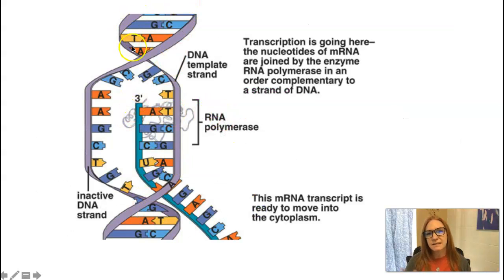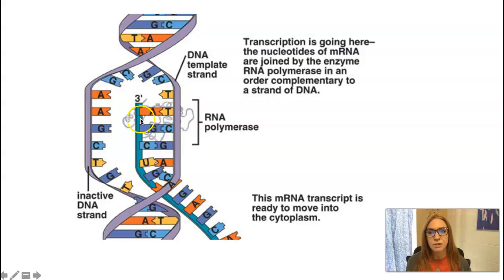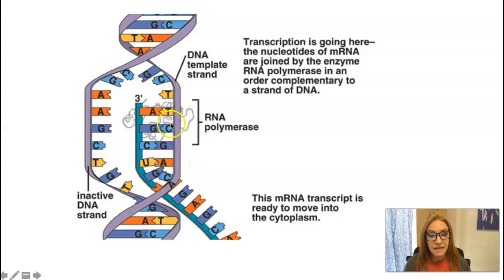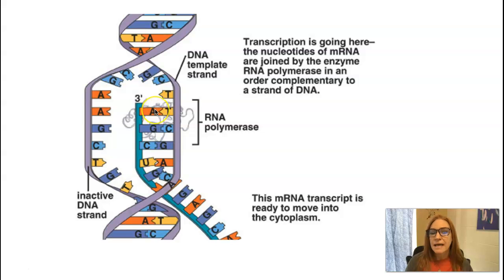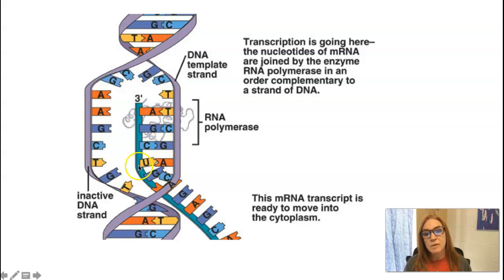DNA is a double-stranded, twisty molecule. If this is the gene, the DNA gets unzipped at the center — this all happens by enzymes, because enzymes are science magic. The enzymes start reading the DNA's nucleotide sequence. So if the DNA strand reads T, C, G, A, C, the mRNA being built will be A, G, C, U, G — using the complementary base. So T on DNA becomes A in RNA; C becomes G; G becomes C; A becomes U.